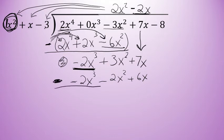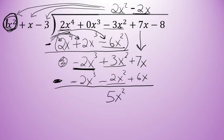Again, subtract. Negative 2X to the 3rd minus negative 2X to the 3rd — when you subtract identical terms, the result is 0. Next, 3X squared minus negative 2X squared — two negatives make a positive — is the same as 3X squared plus 2X squared, which is 5X squared. And the last subtraction in this step is 7X minus positive 6X, which is positive 1X.